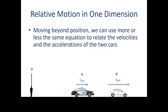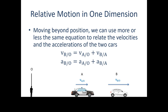Moving beyond position, we can use essentially the same equations to relate velocities and accelerations of two cars. The velocity of B with respect to O equals the velocity of A with respect to O plus the velocity of B with respect to A. For example, if you're in the police car cruising at 30 km/h and the white car passes you appearing to go 15 km/h — what a radar gun would measure — you simply add those together to get the actual velocity of the white sedan. The same applies for acceleration: my acceleration plus the relative acceleration of another body gives the absolute acceleration of the body I'm observing.